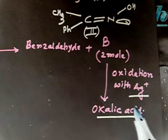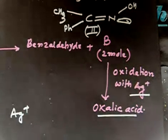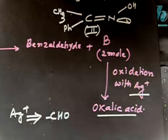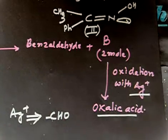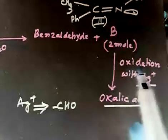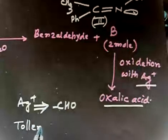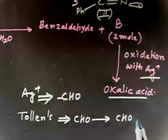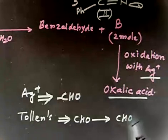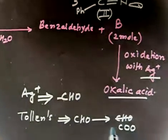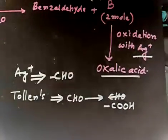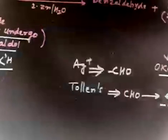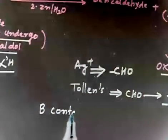Ag+ oxidizes a CHO group to a COOH group — that is the Tollens reagent. The Tollens reaction only converts an aldehyde to an acid. So there must be an aldehyde group in B. Therefore, B must contain an aldehyde functional group.